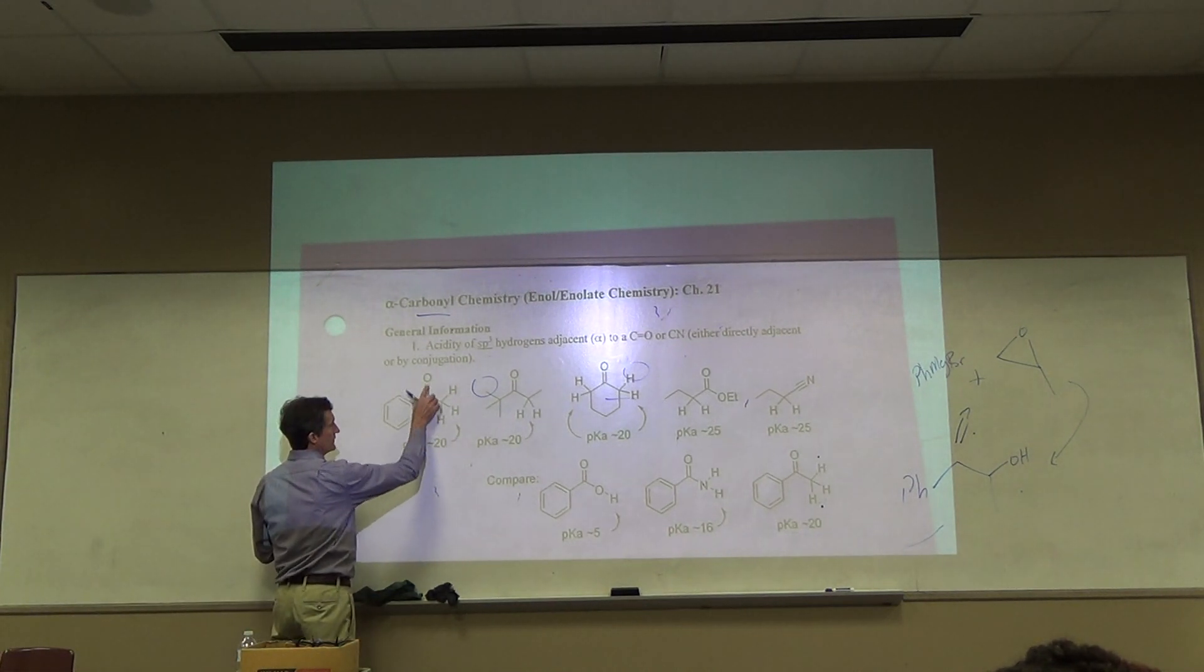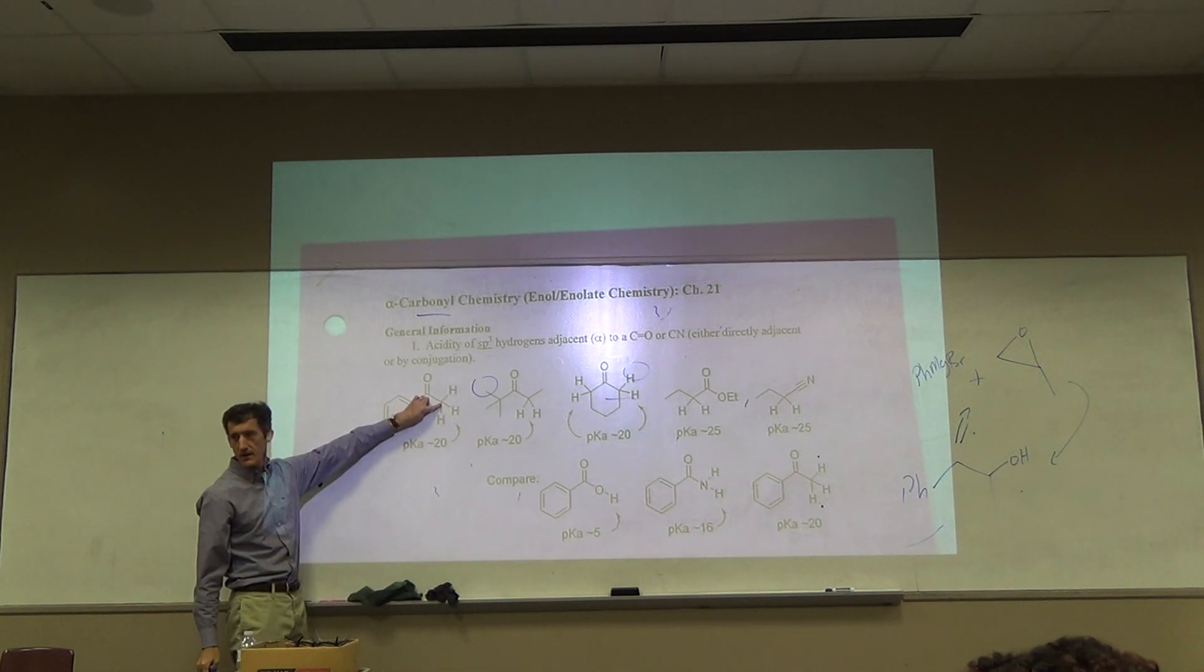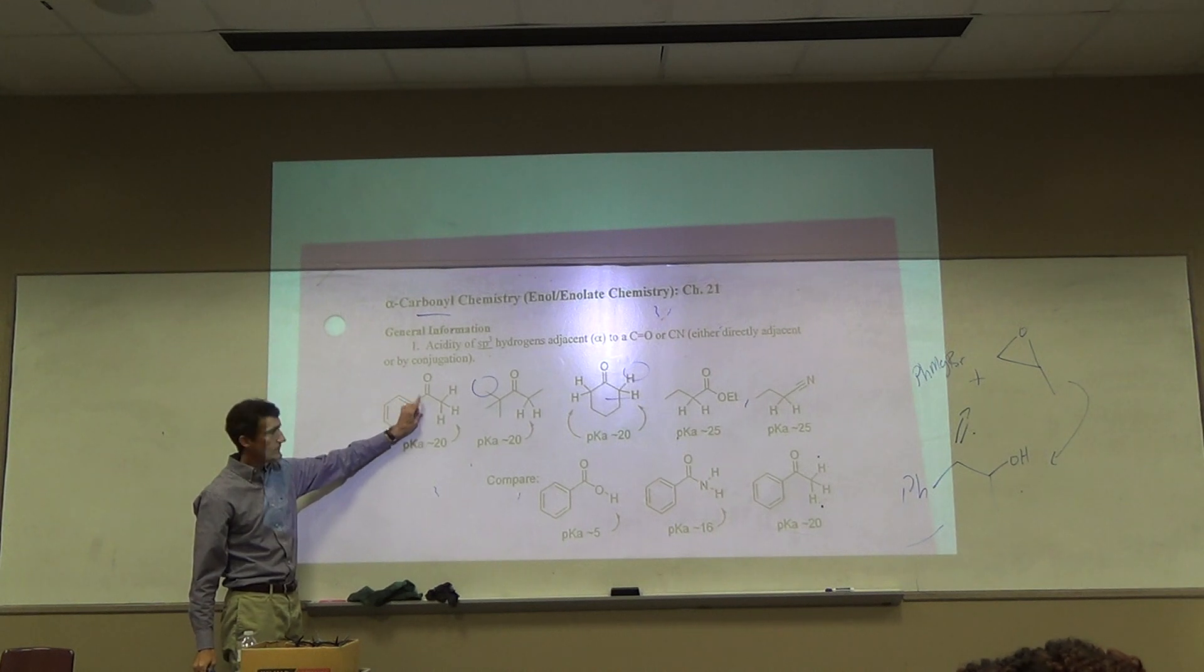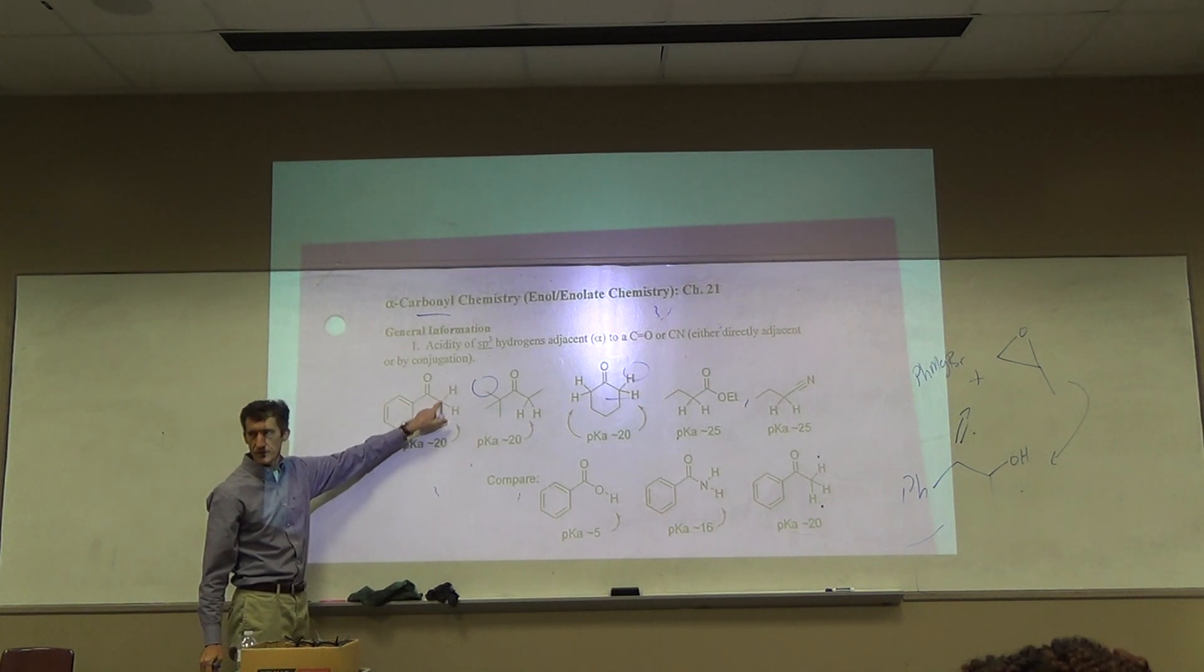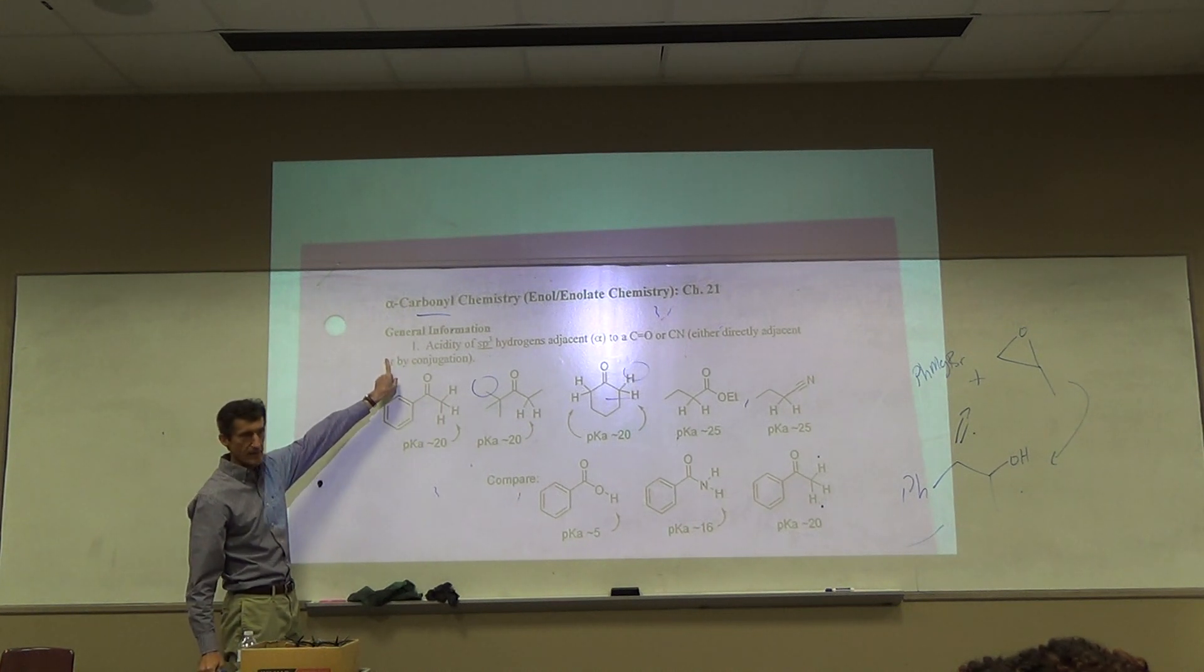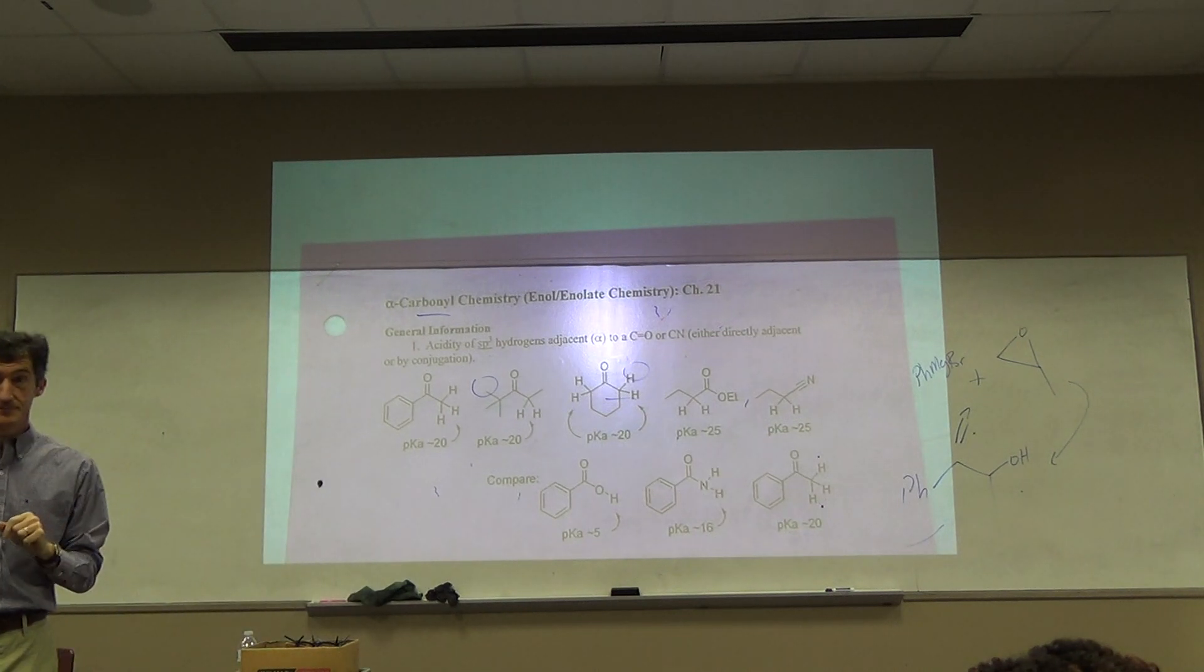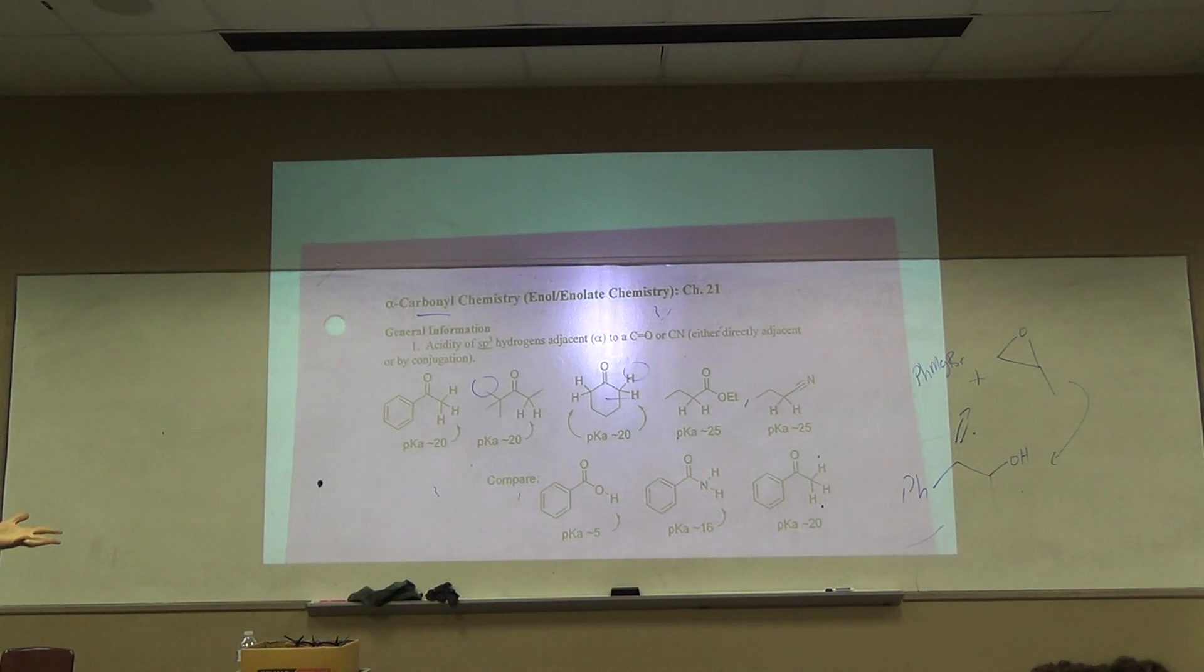Aldehydes, ketones, carbonyl reacting here. Now we're going to move next door and look at this alpha carbon, the carbon next to the carbonyl. We can do chemistry over here. Alpha carbonyl chemistry. And we will see, remember enols? So enols are from organic one when we hydrated alkynes. Enol. And what did the enol then do?